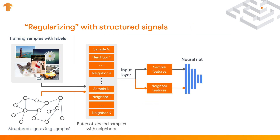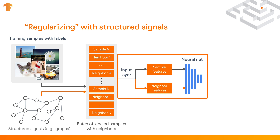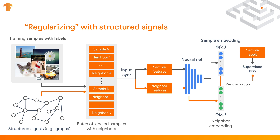Next, both the training sample and its neighbors are fed into the neural net. After the training sample is fed into the neural net, its features activate different neurons layer by layer, forming an embedding representation for this sample. If you are not familiar with the concept of embedding layers, just think of it as a new representation formed by the second-to-last layer of a neural net. The neighbor is processed in the same way, so we will have an embedding representation for the neighbor as well.